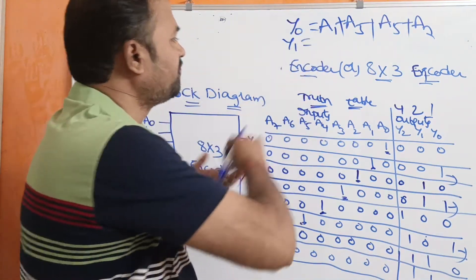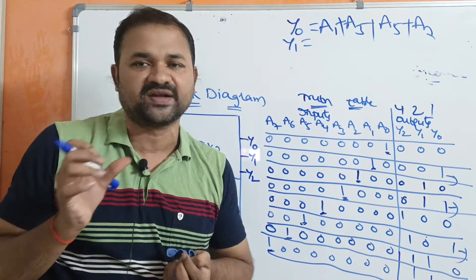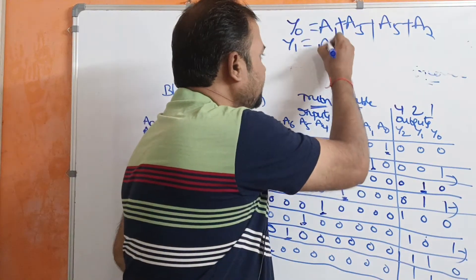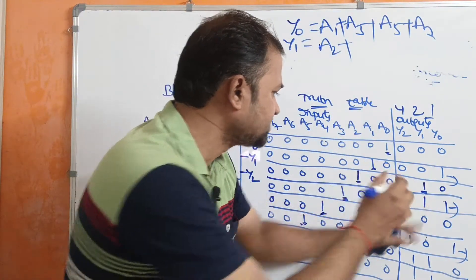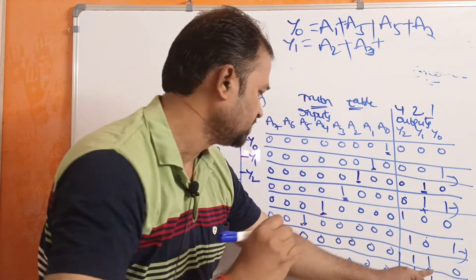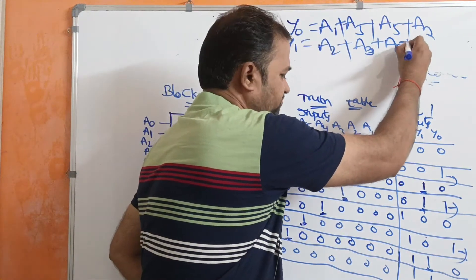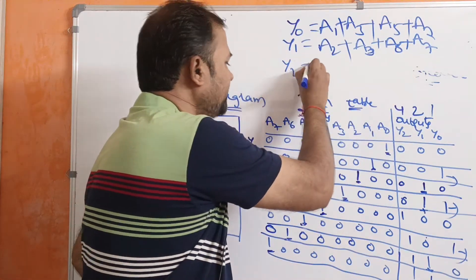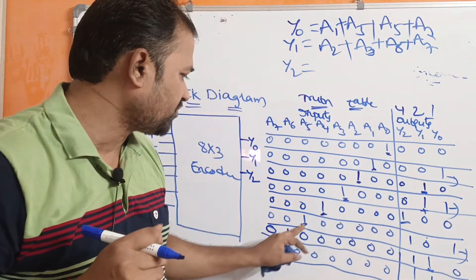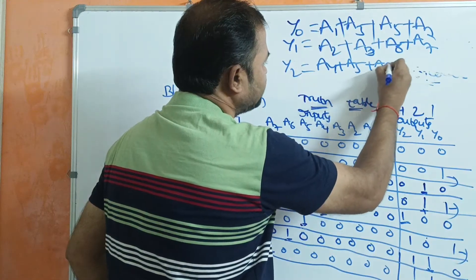Likewise, let us evaluate y1 and y2. Observing the y1 column, we get 1 when a2 is 1, when a3 is 1, when a6 is 1, and when a7 is 1 — so y1 = a2 + a3 + a6 + a7. For y2, observing the y2 column, we get 1 for a4, a5, a6, and a7 — so y2 = a4 + a5 + a6 + a7.